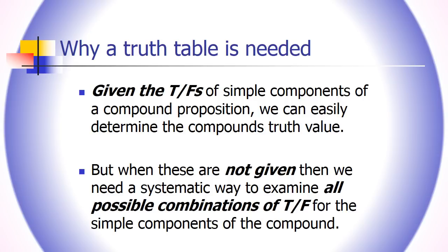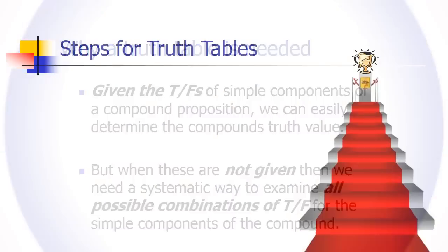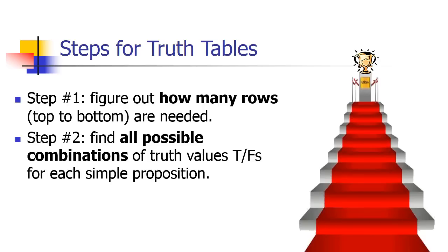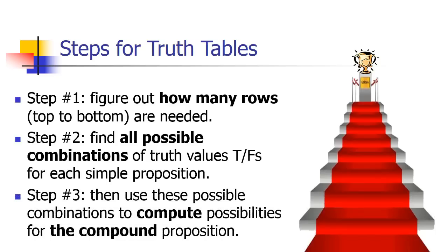However, when you're not given each and every one of these truth values, you need a systematic way to examine — and I have to emphasize this — every possible combination of truth and falsity for the simple component sentences, all the truth assignments that could be given to those individual letters. So here's how you're going to do a truth table: figure out how many rows you're going to need, find all the possible combinations of T and F for the simple propositions, and under each combination, compute for the whole compound.